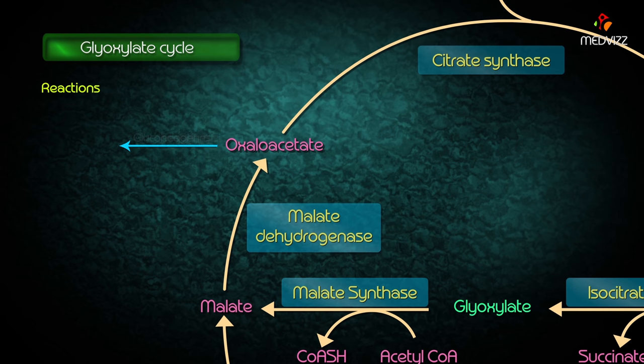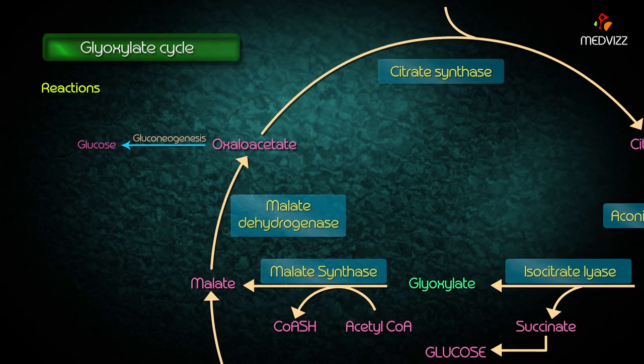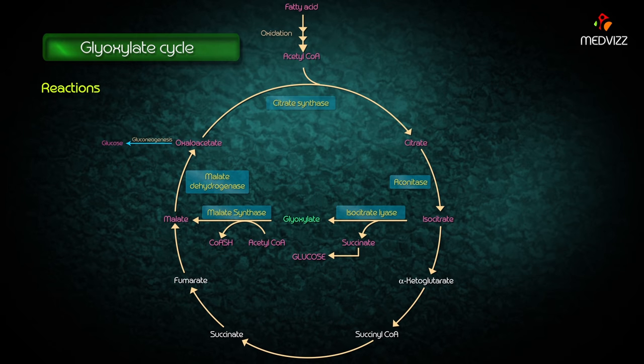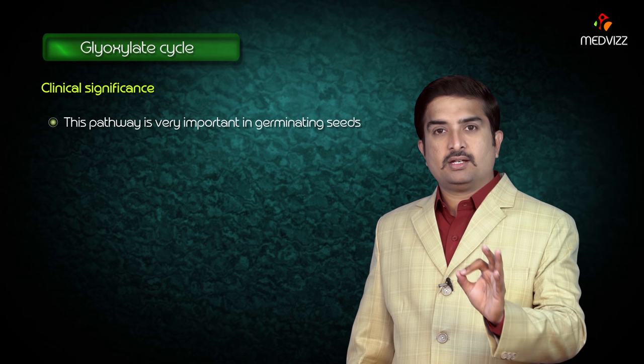The oxaloacetate enters into the gluconeogenic pathway to form glucose, which is the chief source of energy. This is the overall view of the glyoxylate cycle. What is the clinical significance related to this pathway?